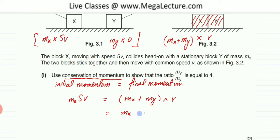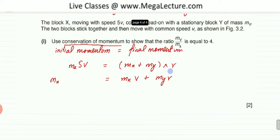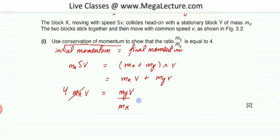Expanding the right side gives MX·V + MY·V. Bringing MX terms together: 5MX·V minus MX·V gives 4MX·V = MY·V. Dividing both sides by V, the V cancels out, and we get MY over MX equals 4, which is the required answer.